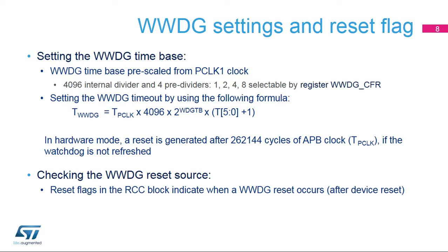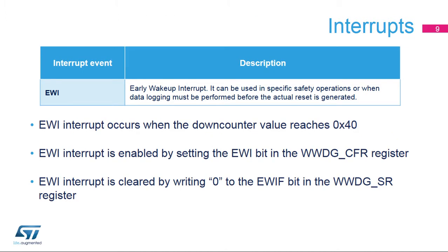When a system reset occurs, it is possible to identify which parts caused the reset, thanks to status flags provided by the RCC block. The window watchdog can be one of the sources. The early wake-up interrupt can be used to perform emergency tasks before the reset occurs, such as data logging, data protection, watchdog refresh to prevent the reset, or other emergency tasks. The EWI interrupt occurs whenever the down-counter value reaches 0x40. It is enabled by setting the EWI bit in the WWDG CFR register. The EWI interrupt is cleared by writing 0 to the EWIF bit in the WWDG SR register.